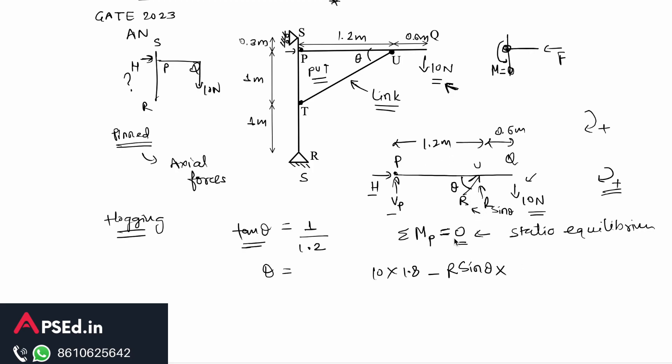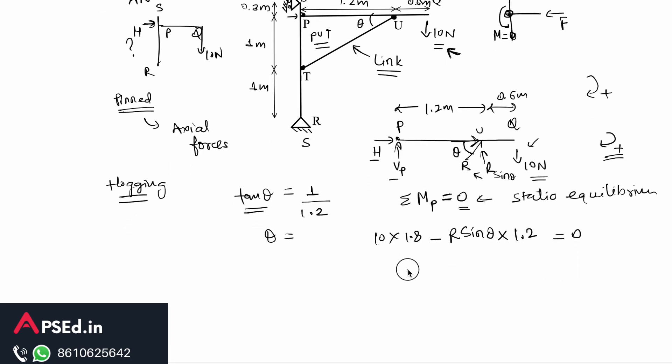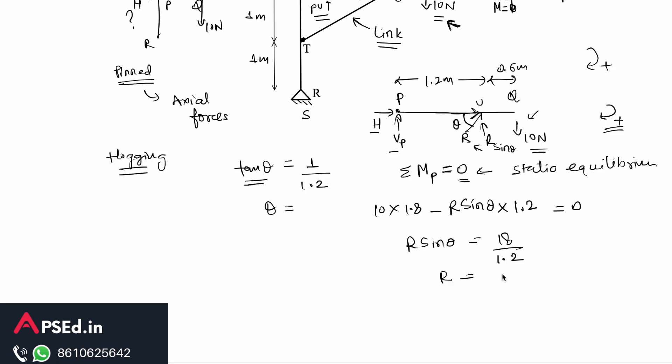So R sin theta into 1.2. R cos theta will be just axial so again it will not have any moment about this point P. So this equal to zero, and from that we have R sin theta equal to 18 by 1.2, or from here we can say R is equal to 18 by 1.2 sin theta.